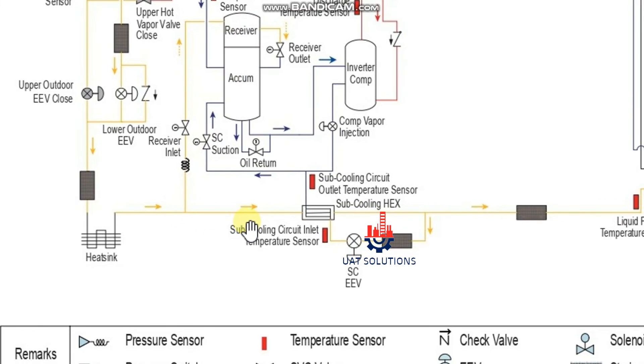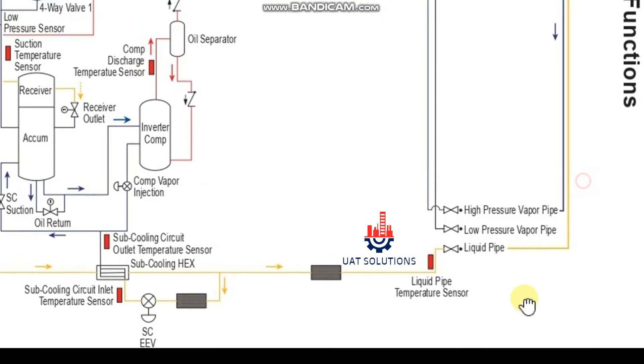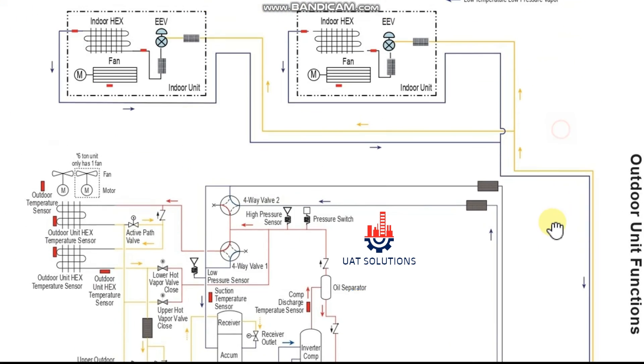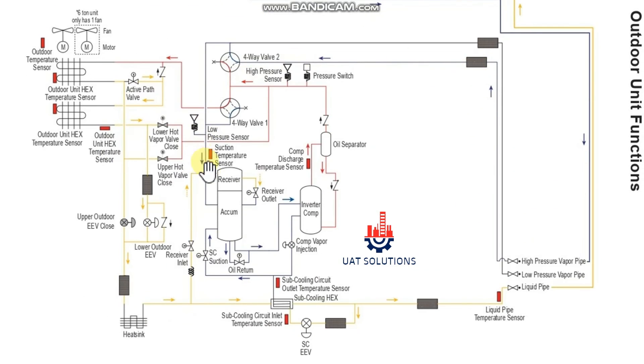After passing through the subcooling circuit, refrigerant enters the indoor unit controlled by the electronic expansion valve. Returning from the indoor unit via suction pipe to the accumulator and then supplied to the compressor from bottom of the accumulator.